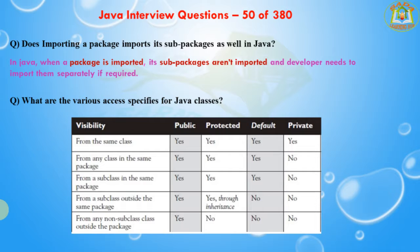From the same class, public, protected, default, and private are all visible. Coming to any class in the same package, public, protected, and default are visible, but private is not visible in the same package.